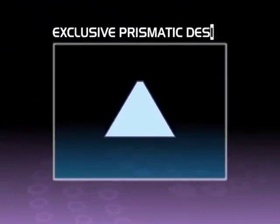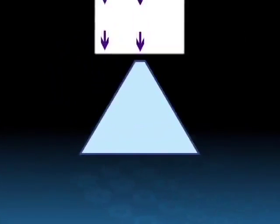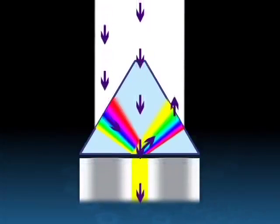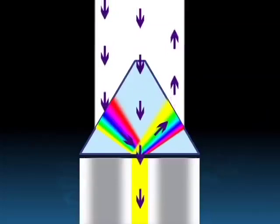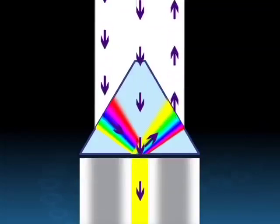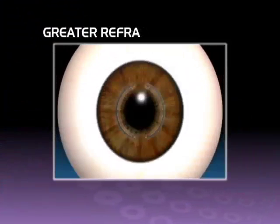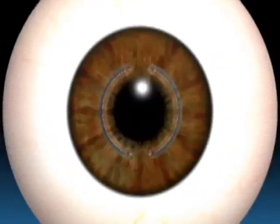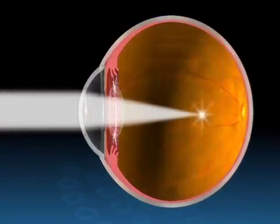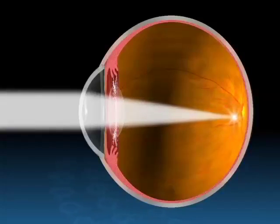Exclusive prismatic design: Cararing's unique design generates a prismatic effect by which light refracted in the implant is reflected out of the eye, thus reducing glare and halos. Greater refractive potential: Cararing's design and implantation zone provide greater potential for refractive change, allowing correction of high degrees of myopia and astigmatism.